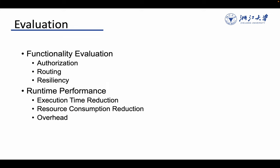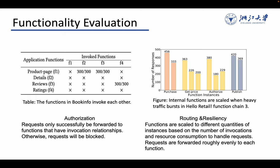We evaluate our system from the following two aspects: functionality evaluation and runtime performance. In the functionality evaluation, we evaluate authorization, routing, and resilience. Requests only successfully be forwarded to functions that have invocation relationships, and functions are scaled to different quantities of instances based on the number of invocations.